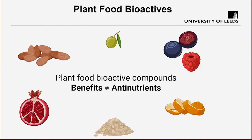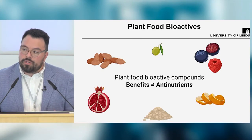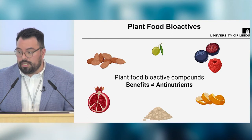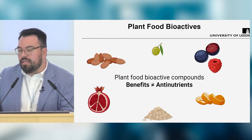One example is phenolic compounds — well known to have amazing antioxidant activity, but phenolics bound to proteins can reduce the digestibility of proteins. Phytic acid is another bioactive compound that has the potential to treat different types of cancer cells, but it can also reduce the absorption of calcium. Bioactives vary greatly in terms of their chemical structure and in the different bioactivities and functionalities that have been discovered.